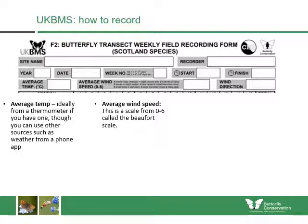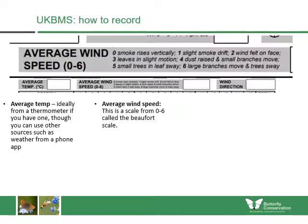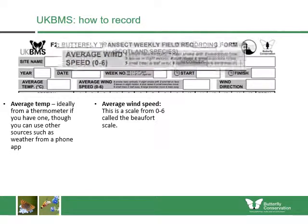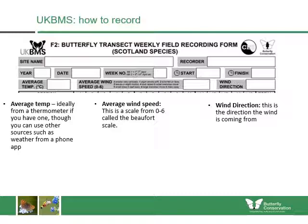Wind speed is recorded on a scale from zero to six called the Beaufort scale — from zero, where smoke rises vertically, all the way up to six, where large branches move and trees sway. If it was very windy, the data analysis might exclude that day's data because it was too windy for butterflies to fly. You should also record wind direction — that is, the direction the wind is coming from.